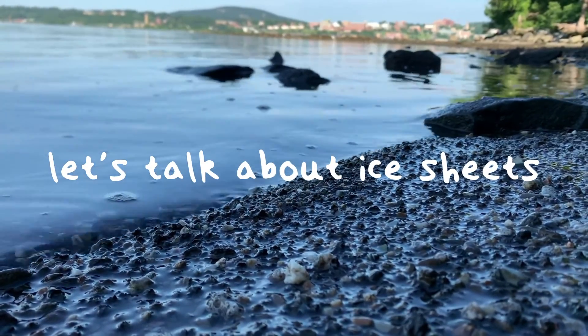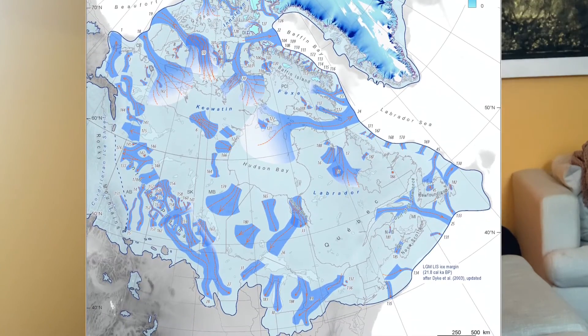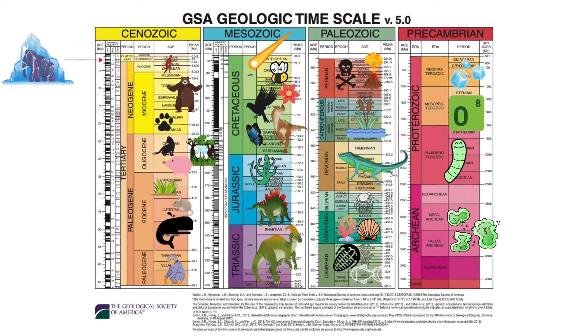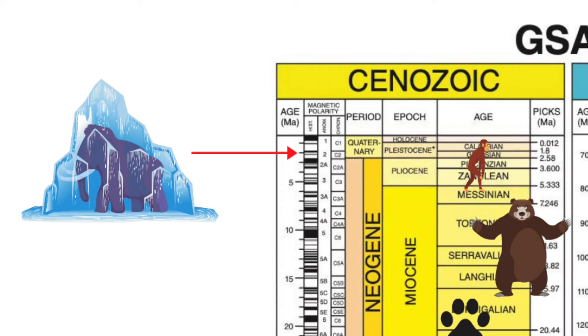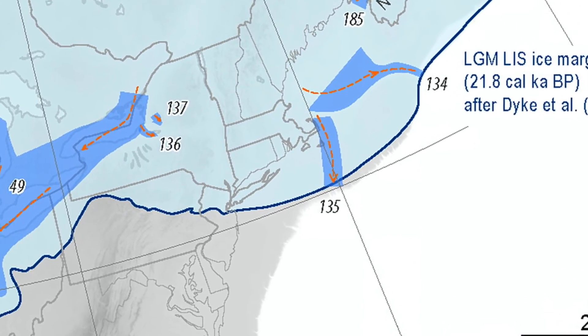The geologic story of the Hudson River starts out with the Laurentide Ice Sheet — a giant ice sheet that used to cover a lot of North America. This was during the last ice age, during the Pleistocene, which was 2.6 million to 11,500 years ago. This was when the last glacial maximum occurred — when all of that ice was at the farthest south it was going to go before it started retreating back. The farthest extent of the Laurentide Ice Sheet was a little bit south of New York City.